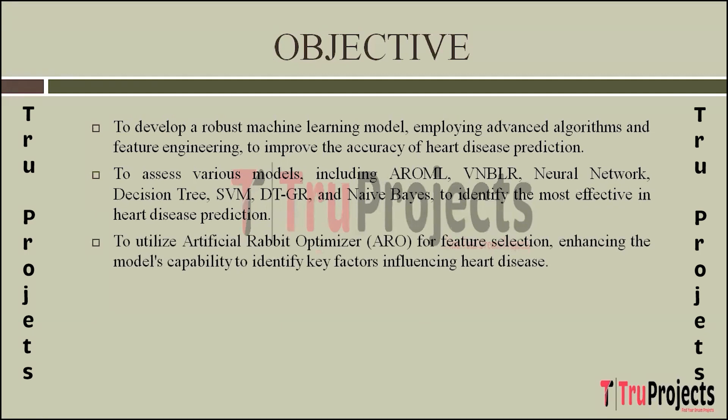We aim to leverage the power of the Artificial Rabbit Optimizer (ARO) for feature selection. This involves identifying and selecting the most relevant features from the dataset, therefore improving the model's ability to recognize key factors contributing to heart diseases.